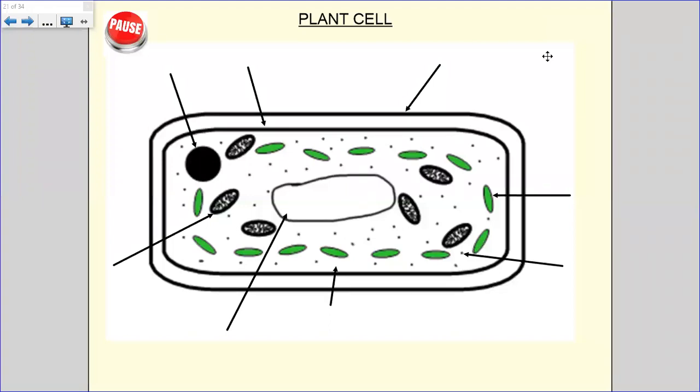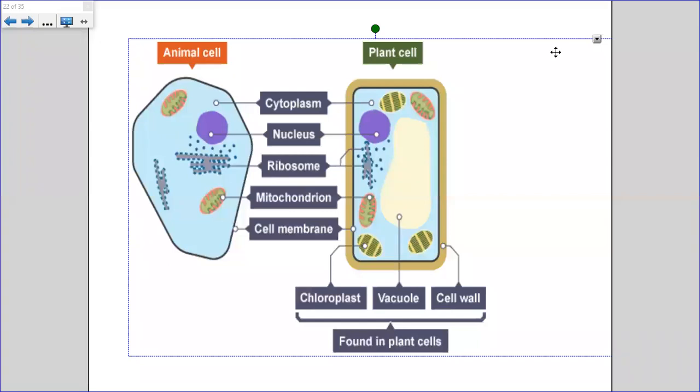All right, so pause the video again, copy down this diagram of a plant cell, and then once you've done that, let the video go again, and you can use the next bit of information to help you label the different parts of the plant cell and also to state what the different parts of the plant cell do. Okay, so here's a diagram of a plant cell and an animal cell. The plant cell is not the same diagram, exactly the same diagram as the one perhaps that you've just drawn. So be careful when you're labelling the different parts that you get the right parts when you're labelling it. Pause the video, use this information to label the parts, and then play the video again, and you'll find out what the different parts of the cell do.